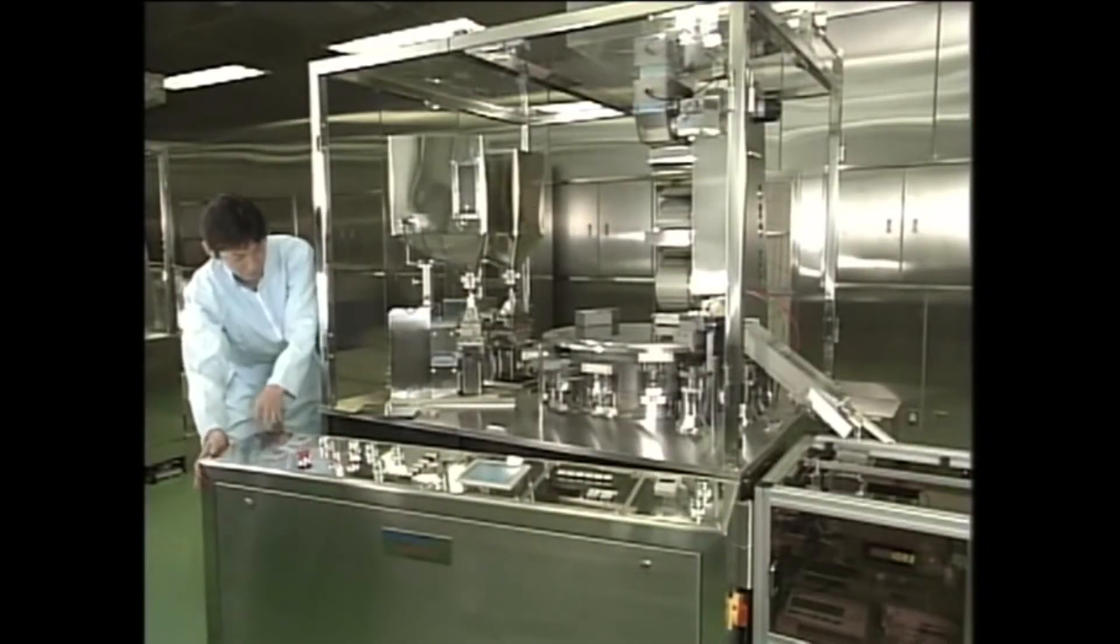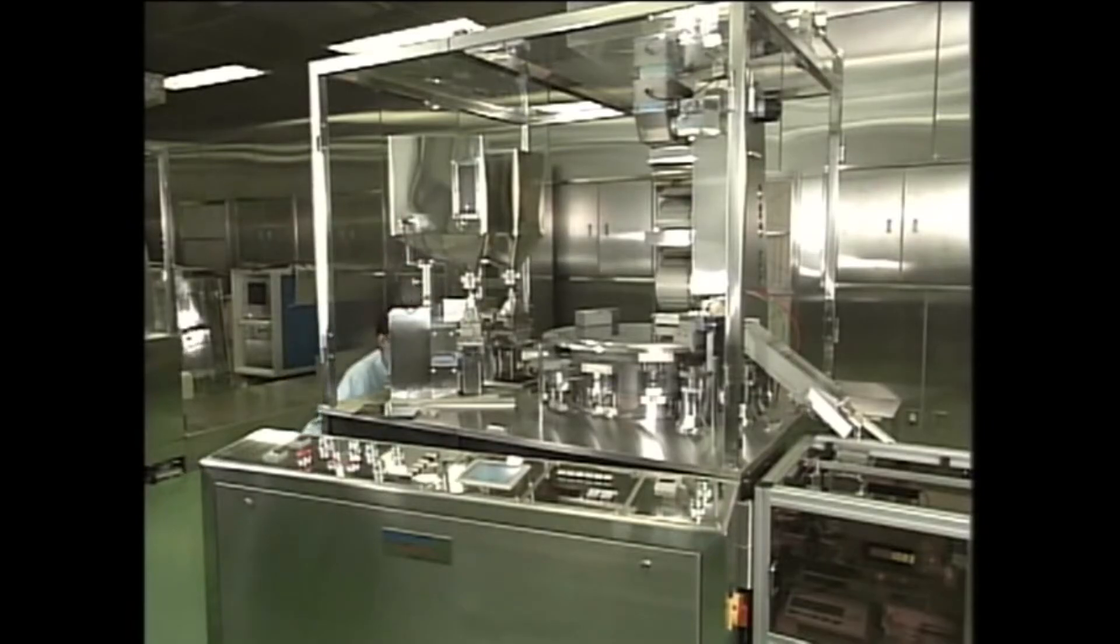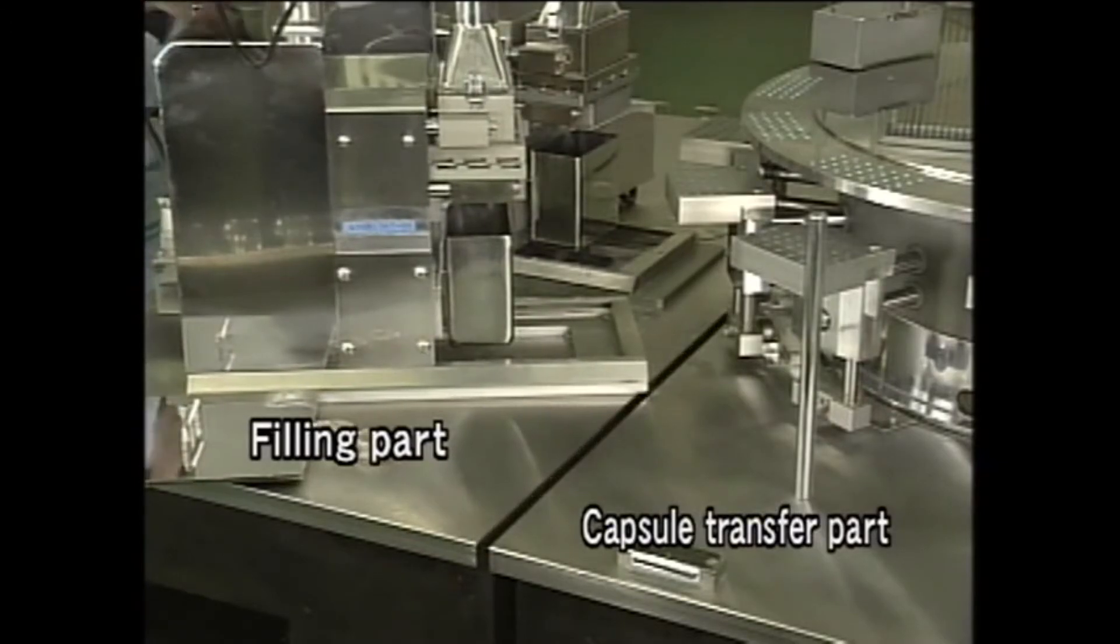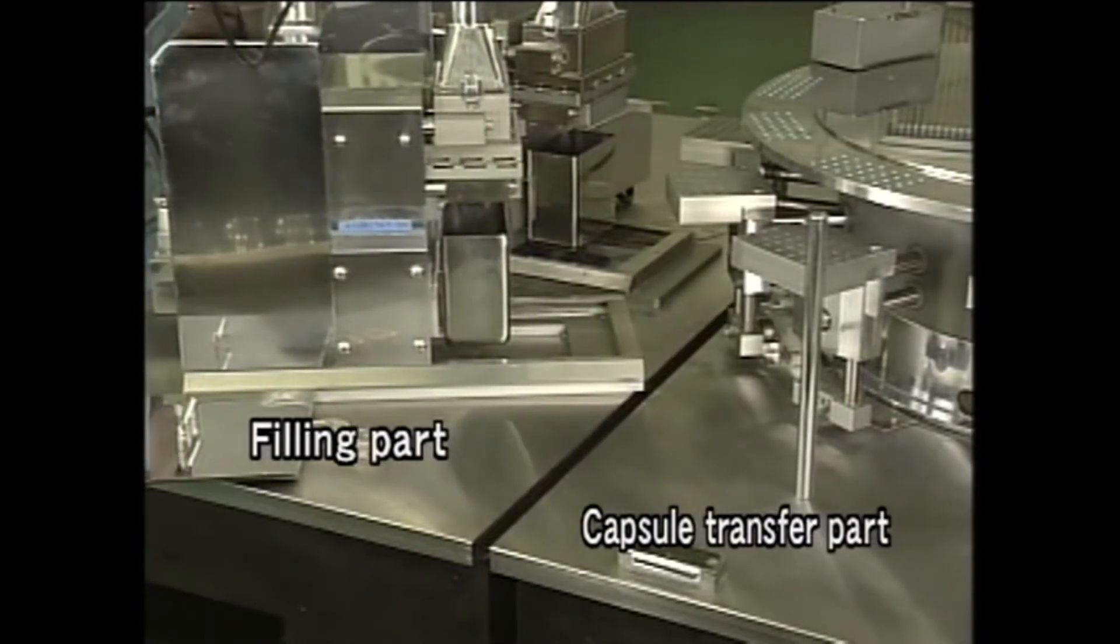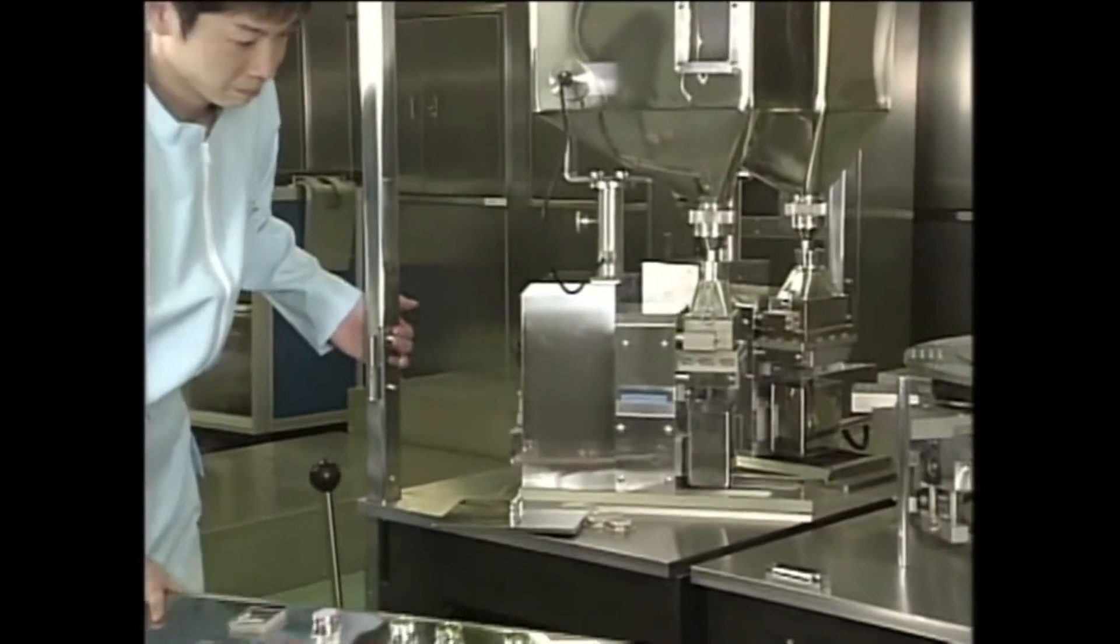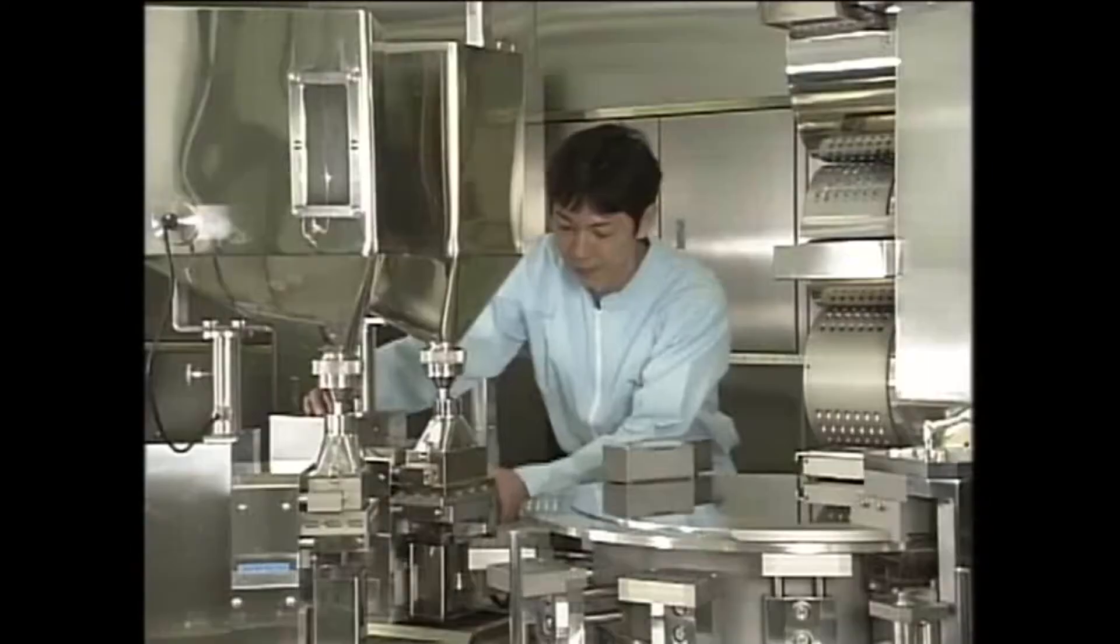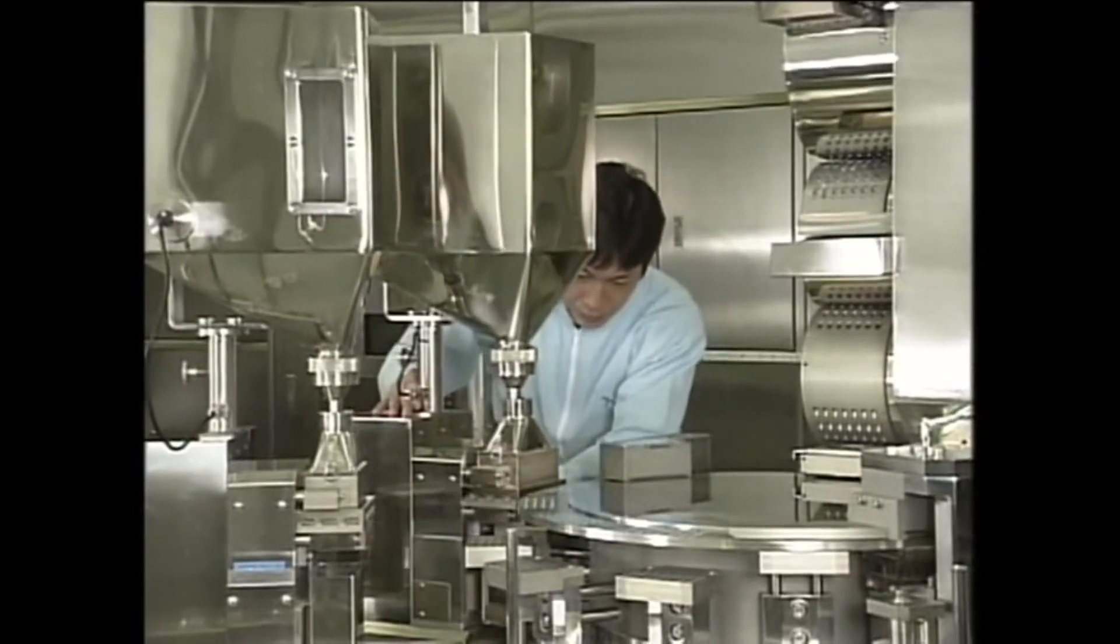This Liqufil Super 80 is a divided filler in which the transportation unit is separate from that for the filling of capsules. For example, in the case of manufacturing granules, this machine permits us to disassemble, clean, and reassemble the powder filling unit, thus greatly improving the operation ratio of the filling machine.